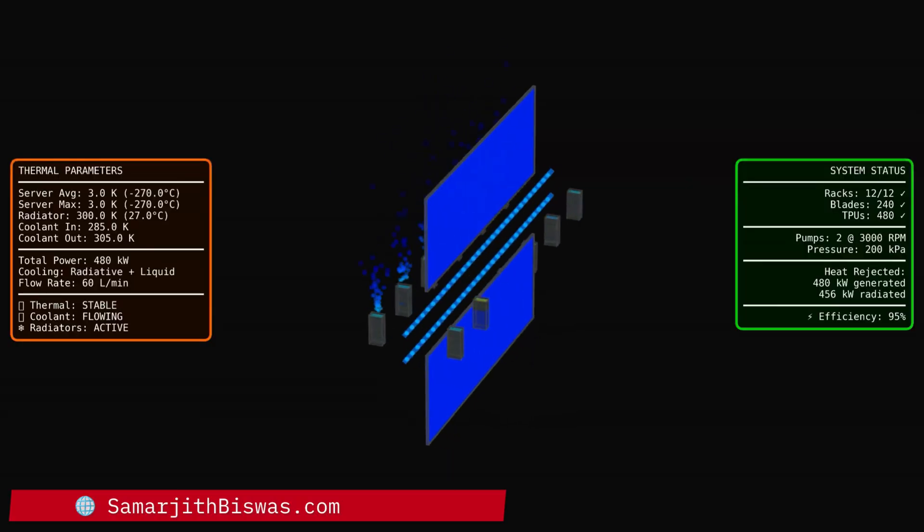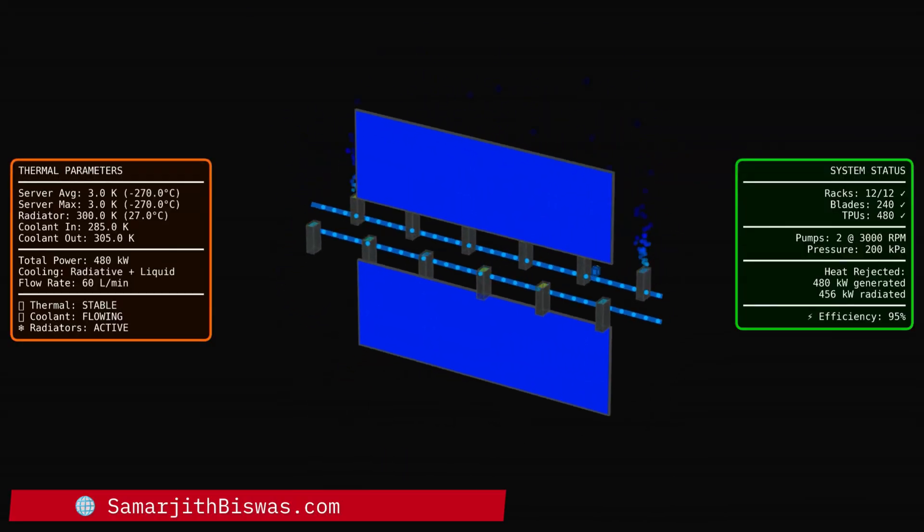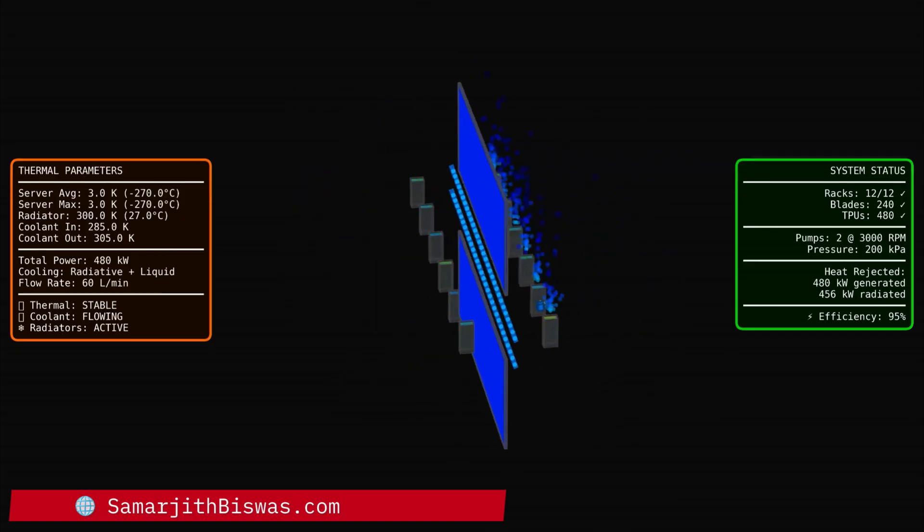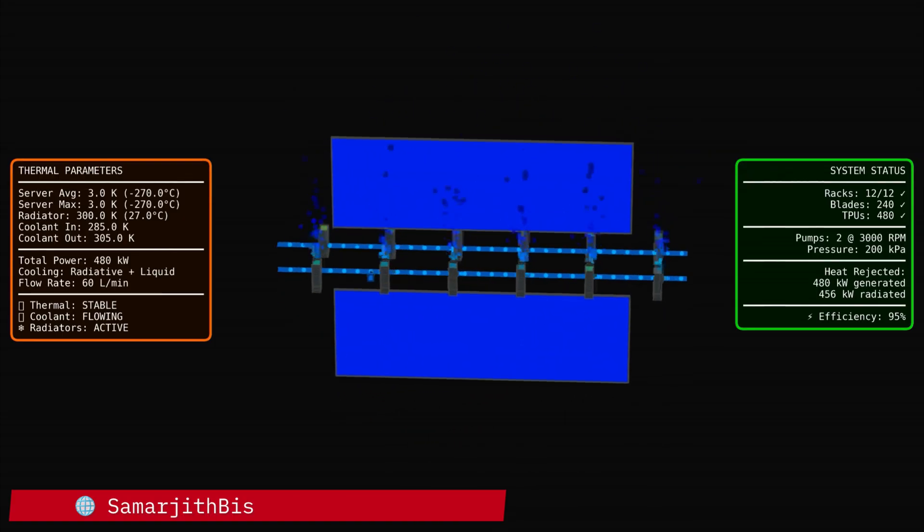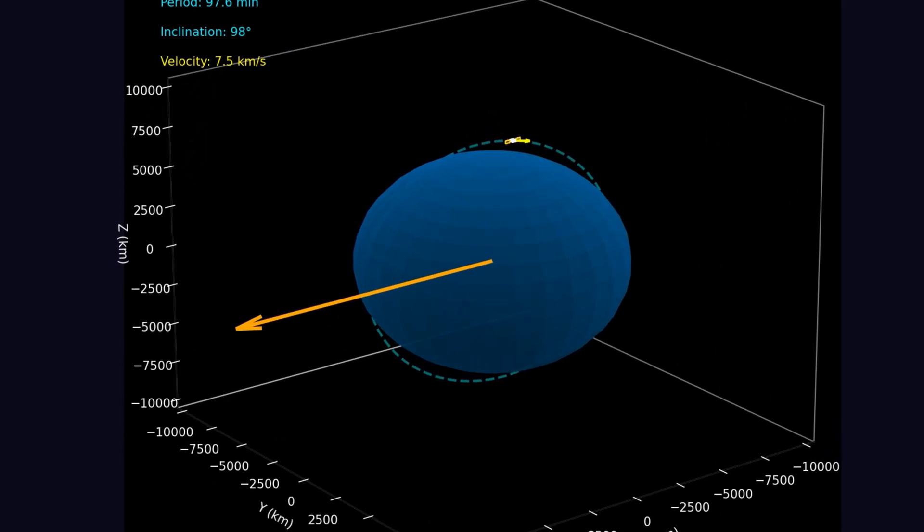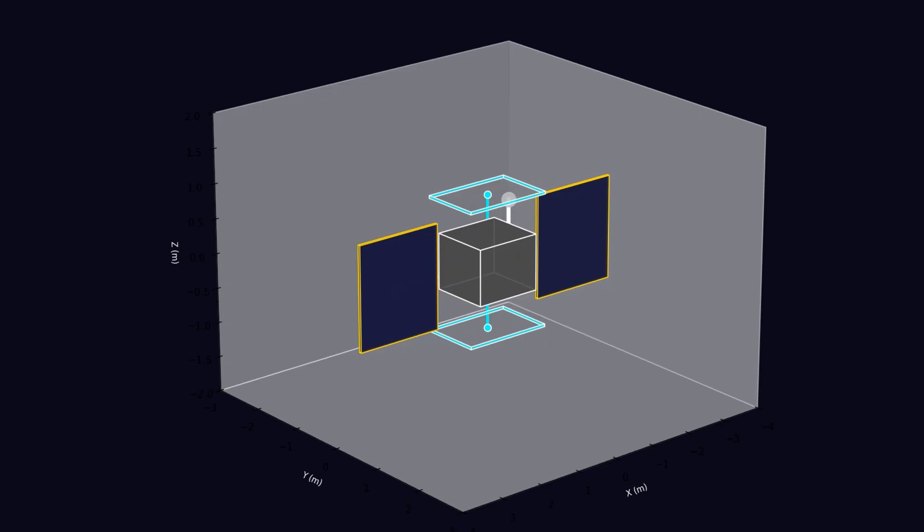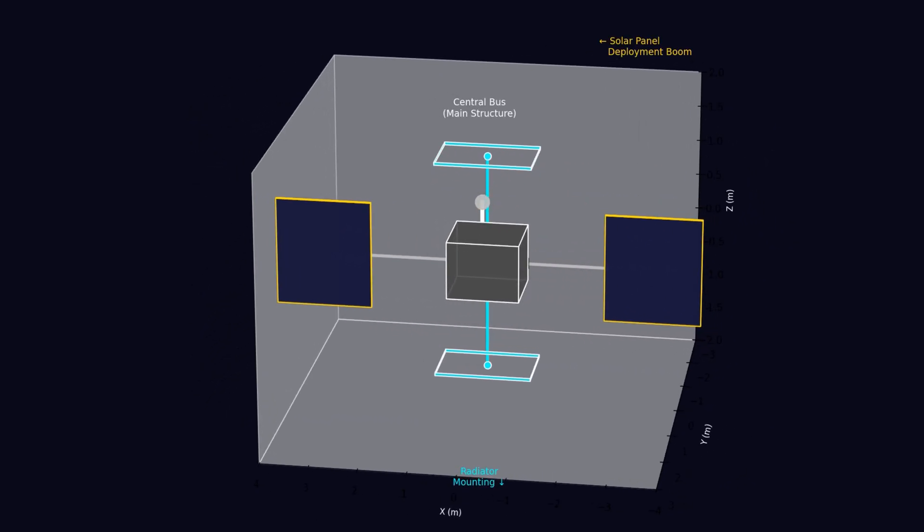Picture this: 81 satellites orbiting at 650 kilometers altitude. Each one carries four Google TPU processors - that's about 3.67 petaflops of computing power. Solar arrays deliver around 3500 watts of continuous power.